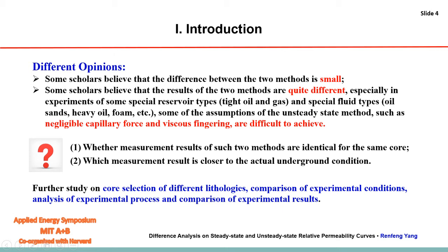In order to exclude the influence of lithology on the relative permeability curve, cores of three lithologies were selected for testing, including 1 dolomite, 3 limestone, and 4 sandstone cores. The experimental conditions were kept the same: temperature, pressure, salinity of saturation water, density of formation water, viscosity of water and oil, and other displacement constraints.